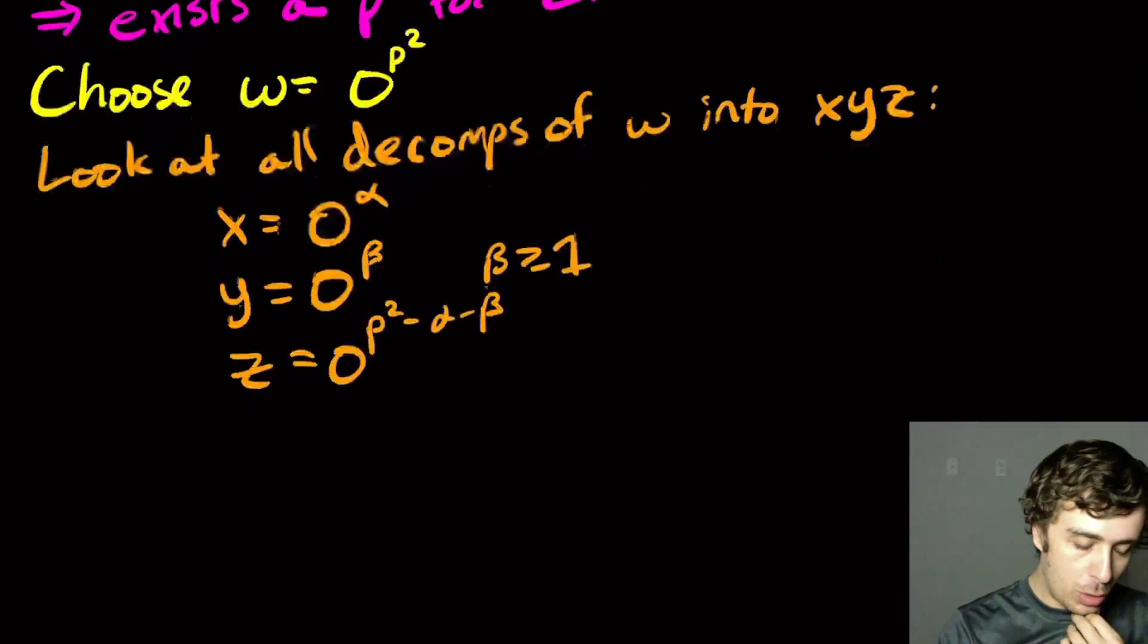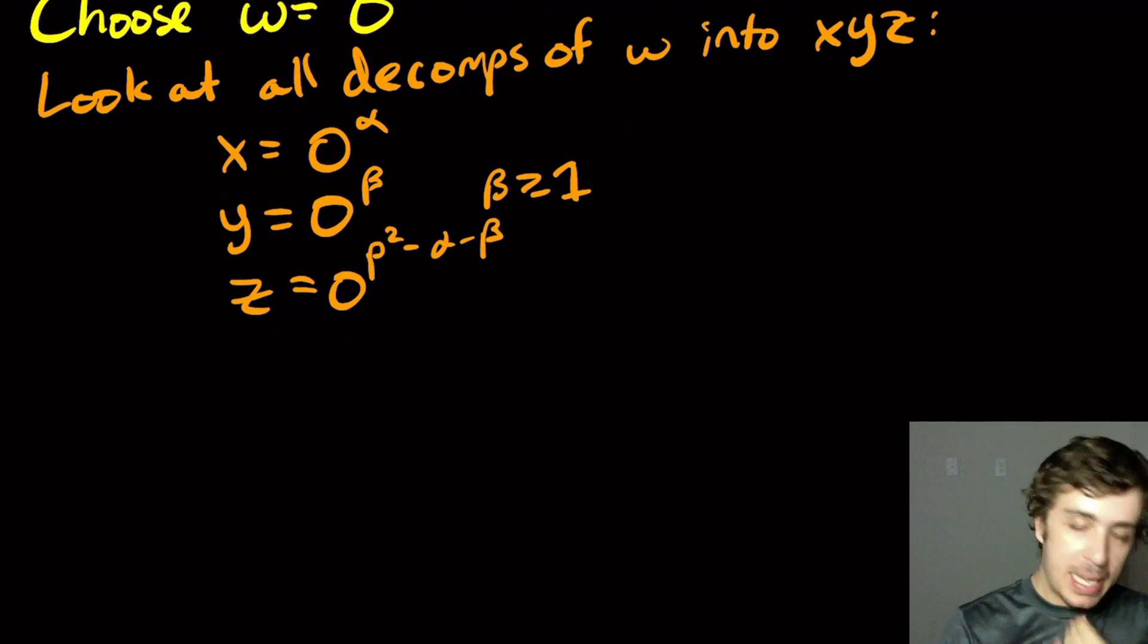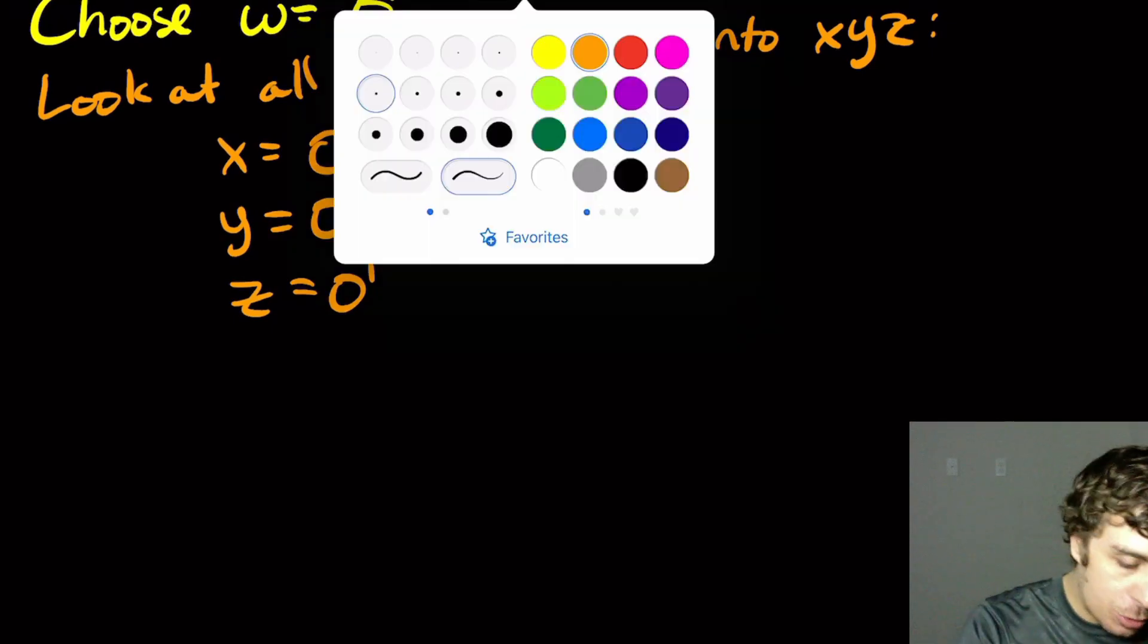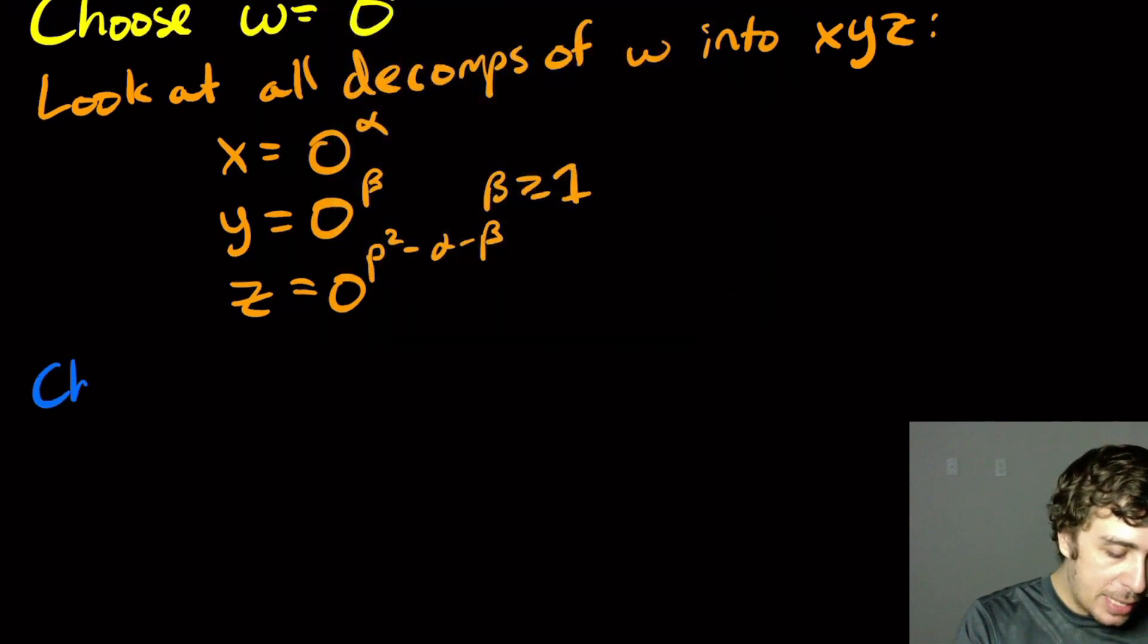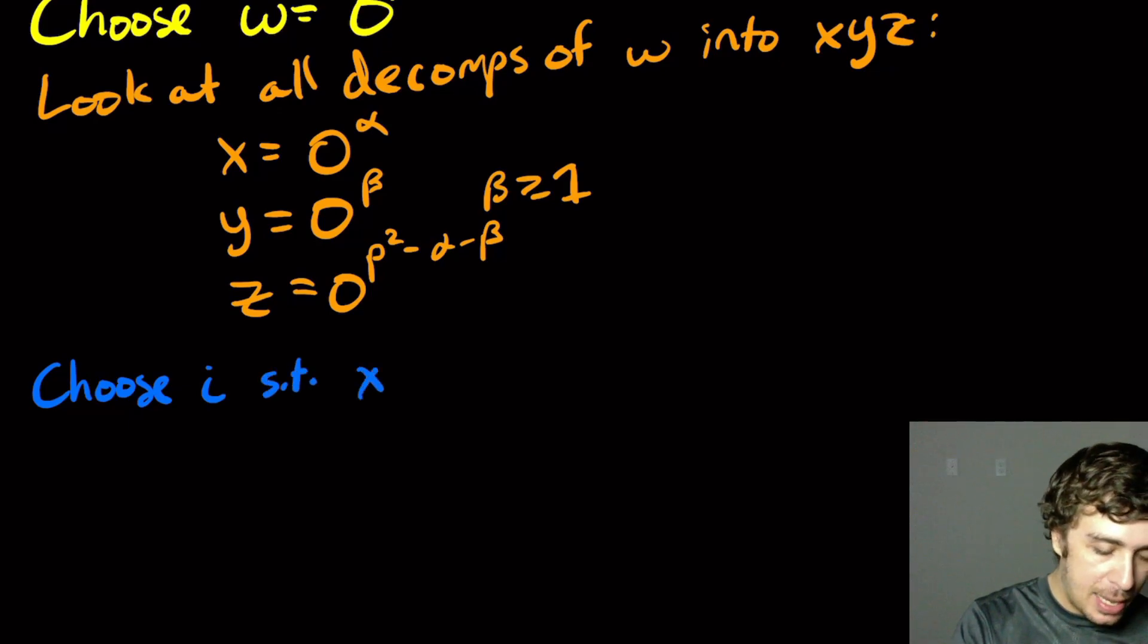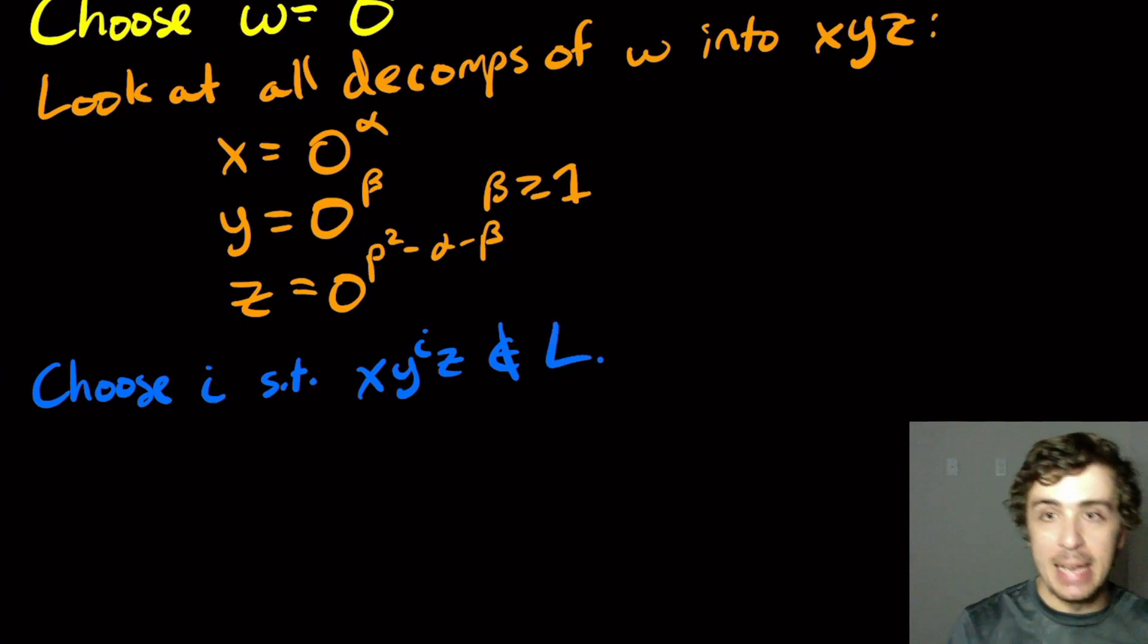Okay, so let's think. Well, here what I'm going to do is I'm going to pick a particular choice of i's. So actually, first off, what do we need to do? Well, we need to choose some value i such that x, y to the i, z is not in the language, because that would contradict the for all statement of this being in the language.